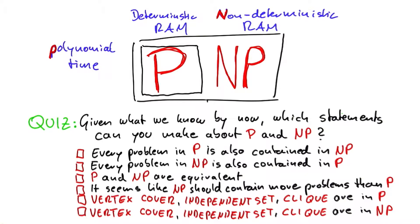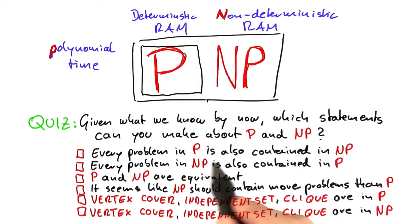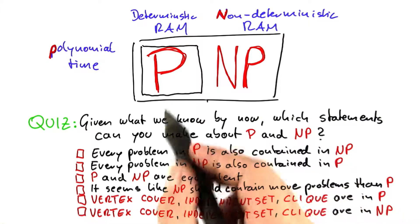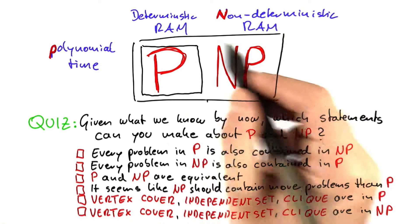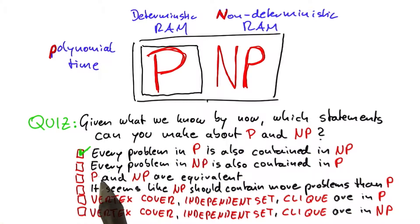There are three statements where we can certainly say by now that they are true. We know that every problem that is in P is also contained in NP. This is why we drew the picture like this — so that's obvious.